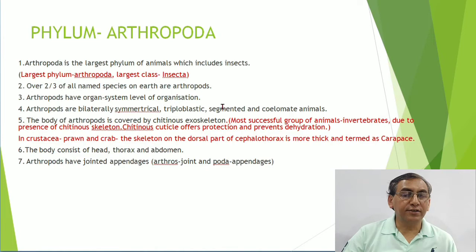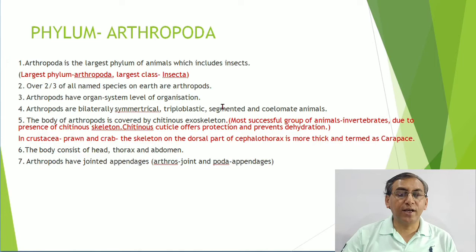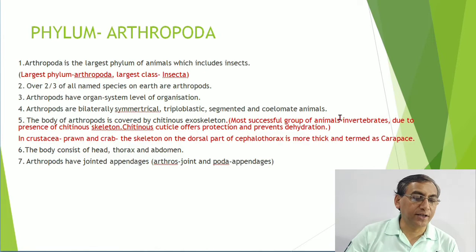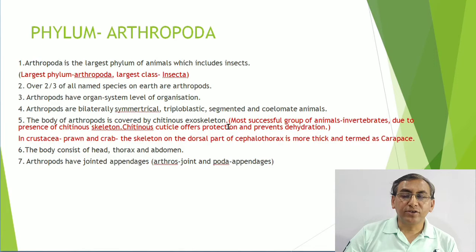Arthropods are bilaterally symmetrical, triploblastic, segmented, and eucoelomate animals. A very important character is that the body is covered by a chitinous exoskeleton. That is why they are considered the most successful group of invertebrates - the chitinous cuticle offers protection and prevents dehydration.